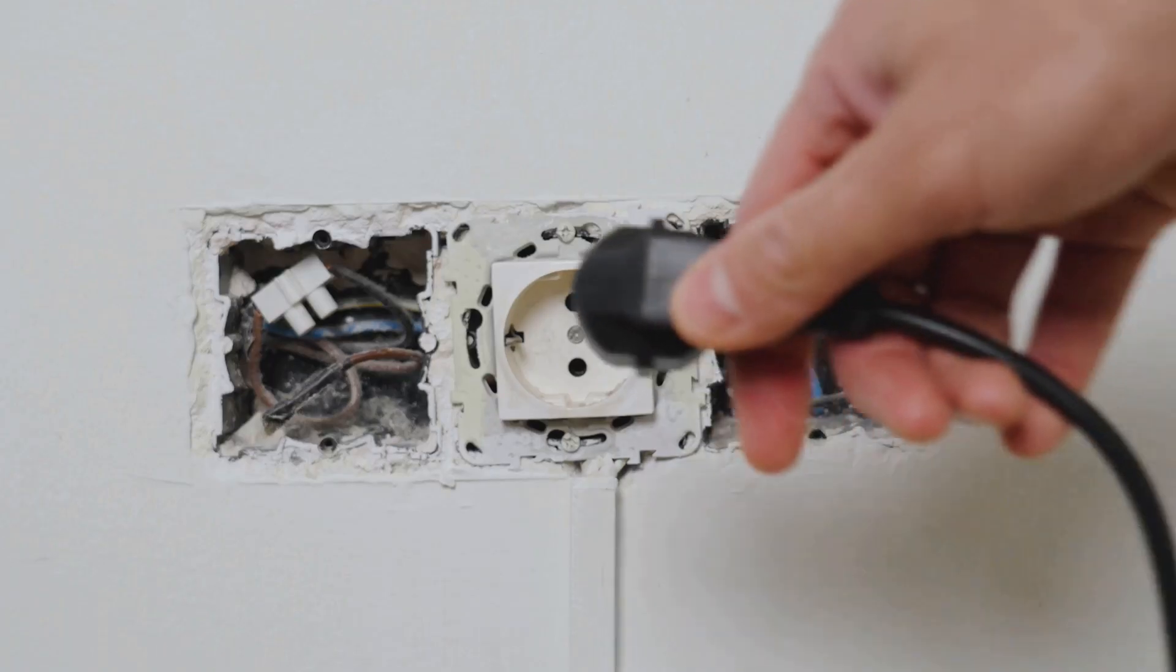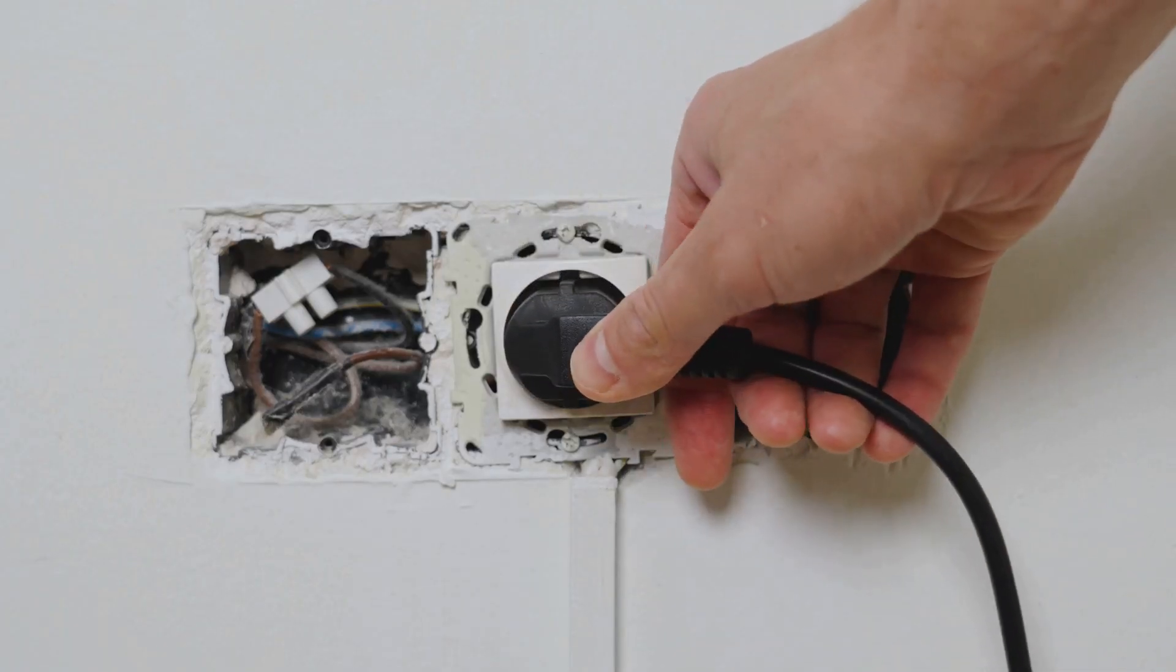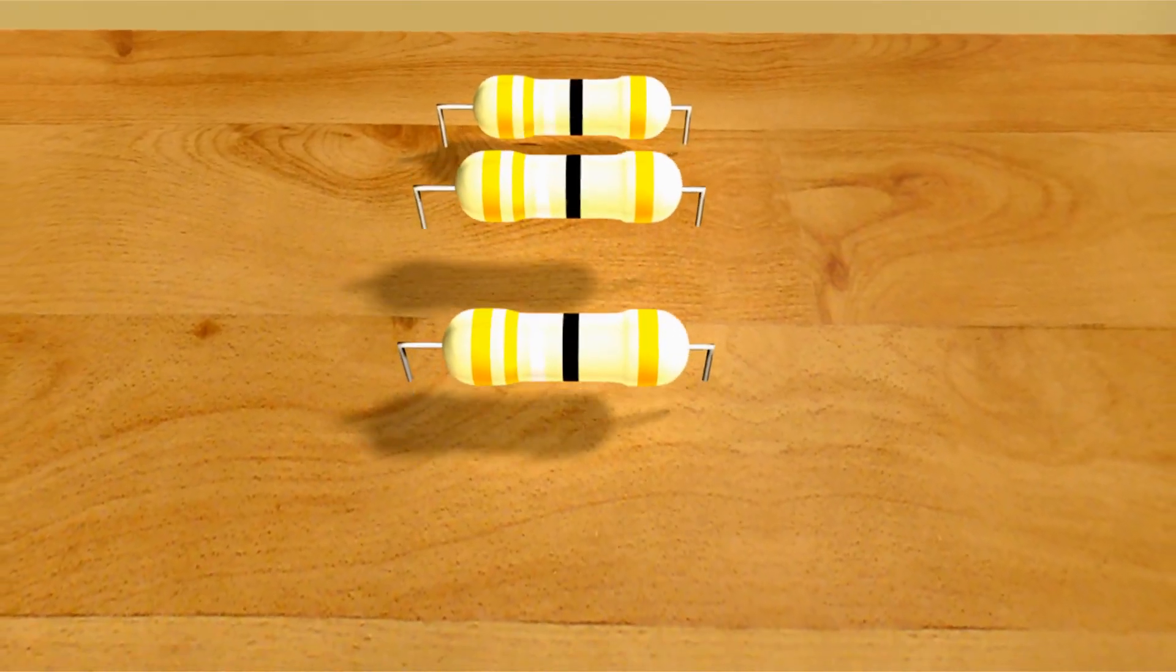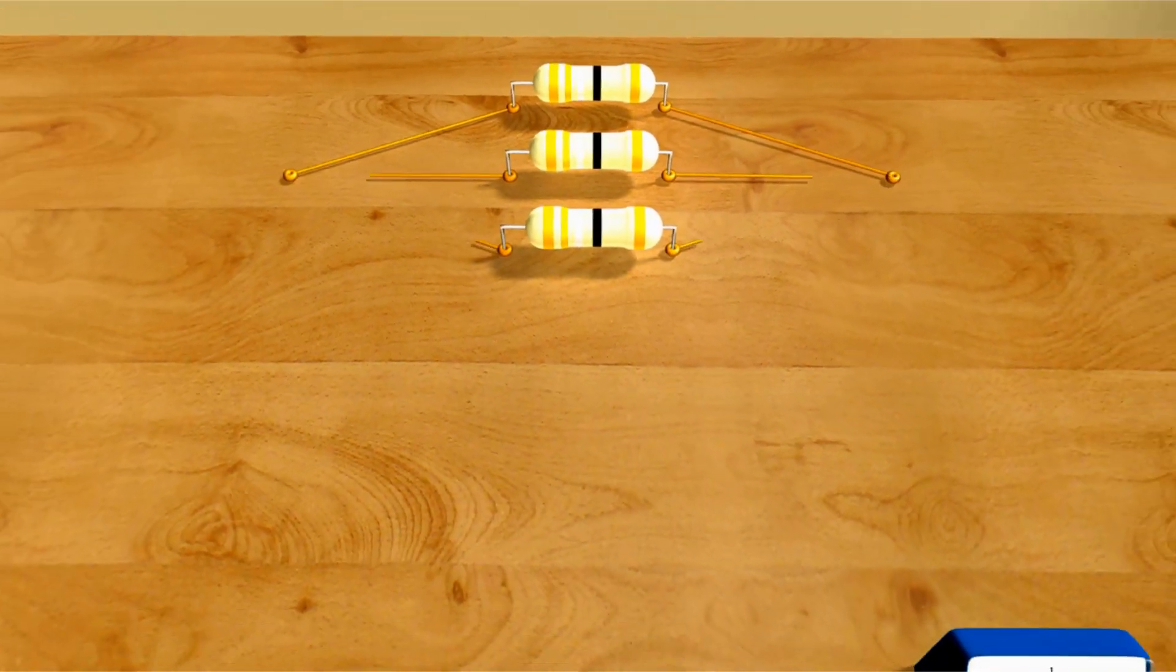However, this barrier can be overcome by applying an external voltage. The behavior of the diode changes depending on the polarity of the applied voltage. This leads to the diode's unidirectional current flow characteristic.